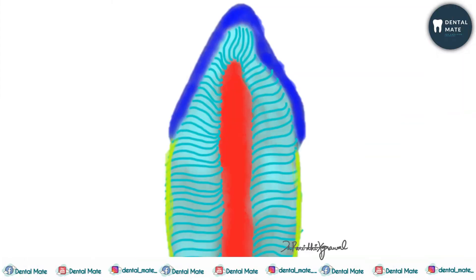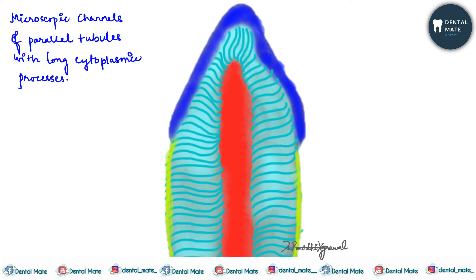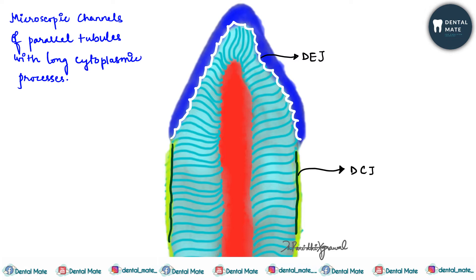First of all, let us talk about dentinal tubules. What are dentinal tubules? These are basically microscopic channels of parallel tubules along with long cytoplasmic processes which are present in them — minute parallel tubules containing long cytoplasmic processes of dentine of a tooth which communicate with dental pulp. They extend from the dentino-enamel junction in the crown and the dentino-cemental junction of the root to the outer wall of the pulp.